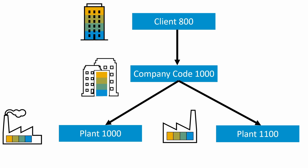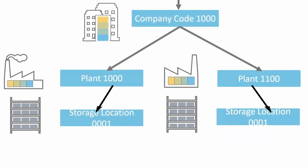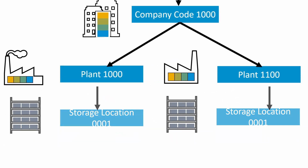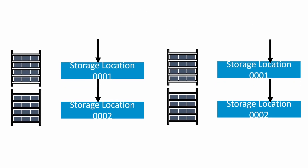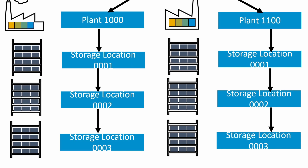That means one plant belongs to only one company code, but one company code can have multiple plants. We can create a number of storage locations within the plant. The same key can be used to create storage locations in another plant. For example, in plants 1000 and 1100, we can use the same key to create storage locations.